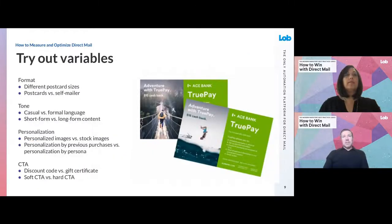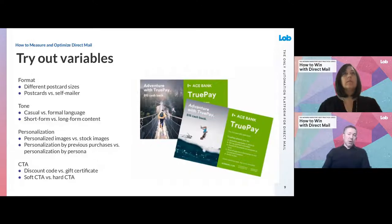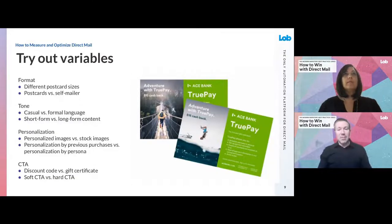What are some of the variables we see folks testing? The first and probably easiest is different formats — do you want an 8.5 by 11-inch letter in a custom envelope, or an 8.5 by 11-inch letter in a 6 by 9 envelope with a large window format, or a 6 by 9 postcard versus a 6 by 11 postcard? Which profile will stand out more and have a higher response rate? Or maybe try postcards versus self-mailers. All it is is passing a different parameter in your request to Lob.